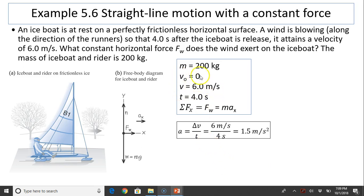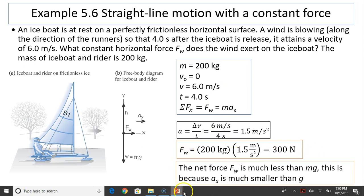So from here, V0, V, and T, we can find acceleration. Acceleration is 1.5 meters per second squared. Plugging into the equation, we have the force of wind is 300 newtons. Does this answer make sense? Well, 300 newtons is much less than the weight of the boat, which is about 2,000 newtons. Why is that? This is because Ax is 1.5 meters per second squared, which is much smaller than g, 9.8 meters per second squared.